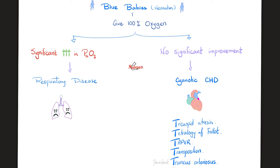Such as the famous cyanotic congenital heart diseases - all of them start with a T: tricuspid atresia, tetralogy of Fallot, transposition of the great vessels, truncus arteriosus, and total anomalous pulmonary venous return.